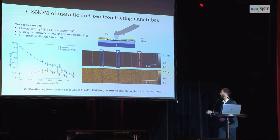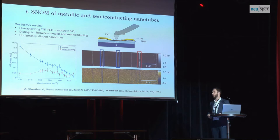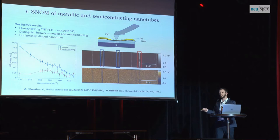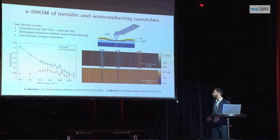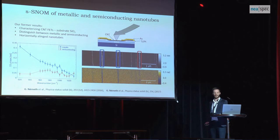We could do that because the SNOM signal in the infrared regime is very sensitive to the local charge carrier density, so it is really easy to distinguish metallic and semiconducting carbon nanotubes. As for the metallic carbon nanotubes — we care about them because they support really unique plasmon polaritons.